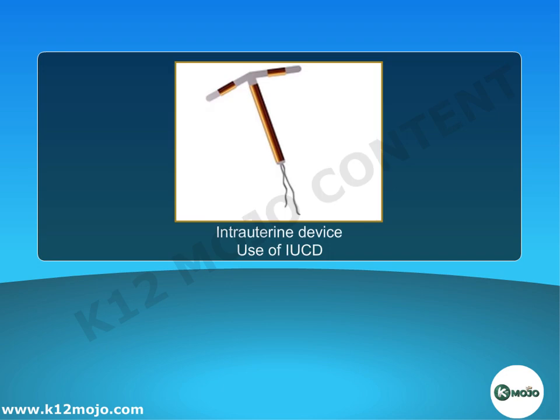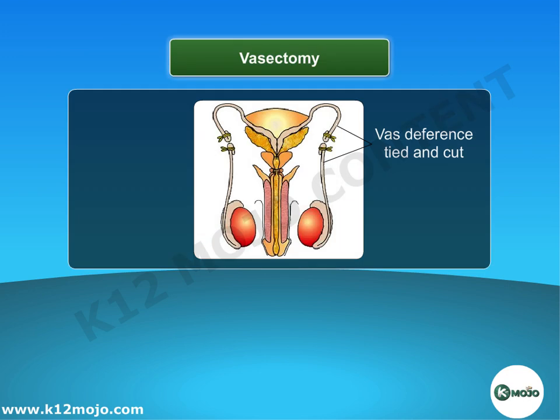Use of IUCD: An intrauterine contraceptive device, such as the copper T, is placed in the uterus, which prevents the implantation of a fertilized egg.